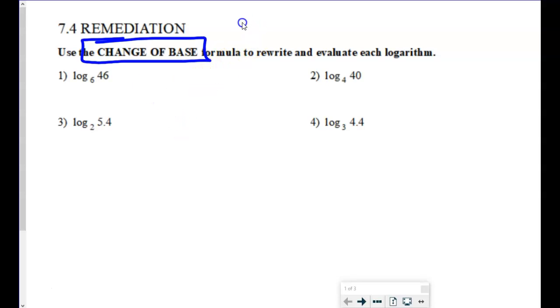So the way the change of base formula works is that you use your common or your natural log button to change the base essentially. So the shortcut version looks like this. It's going to be the log of N divided by the log of B, the base.